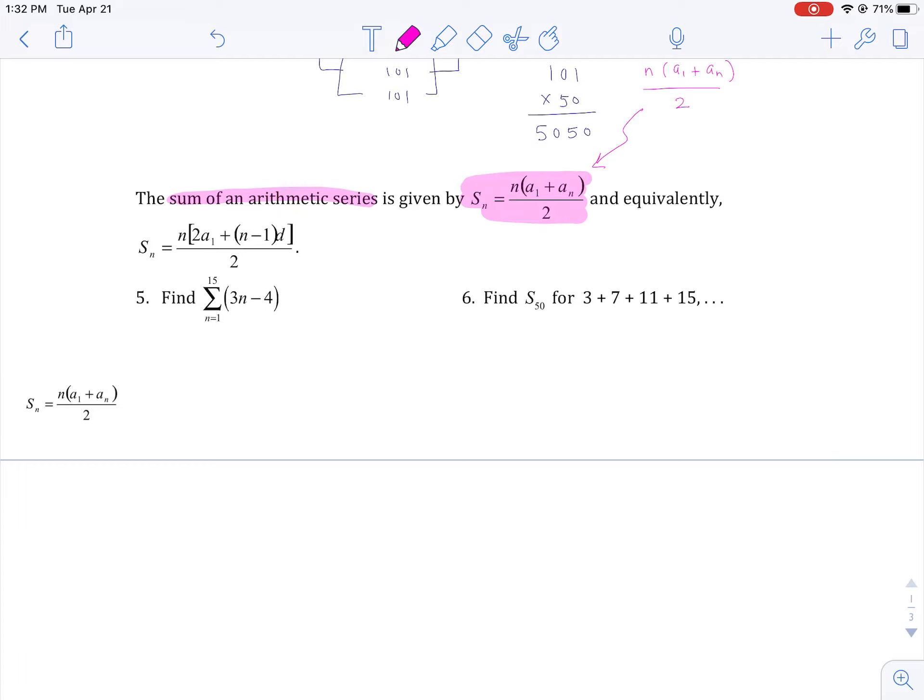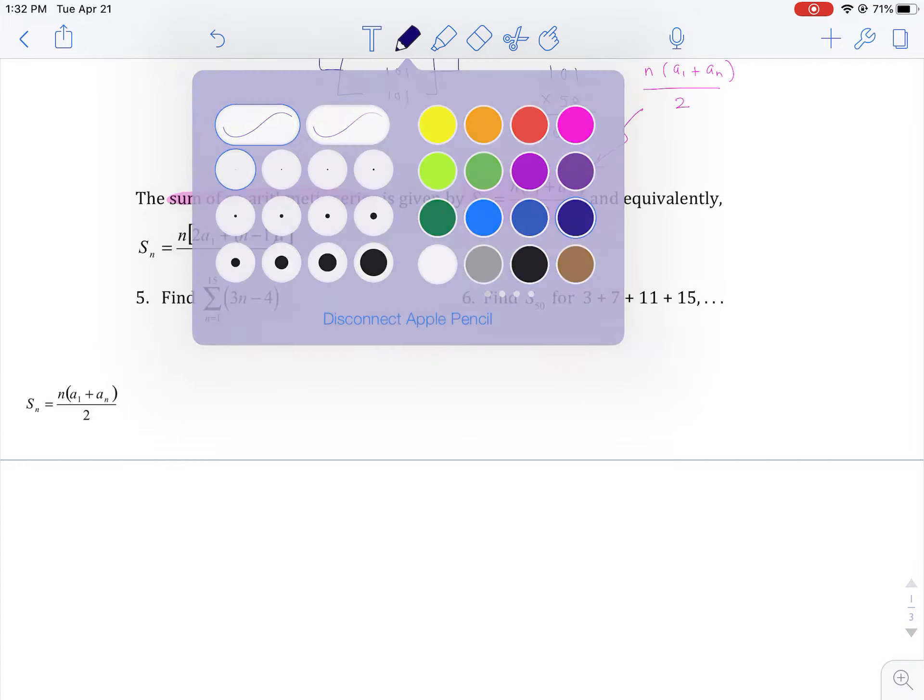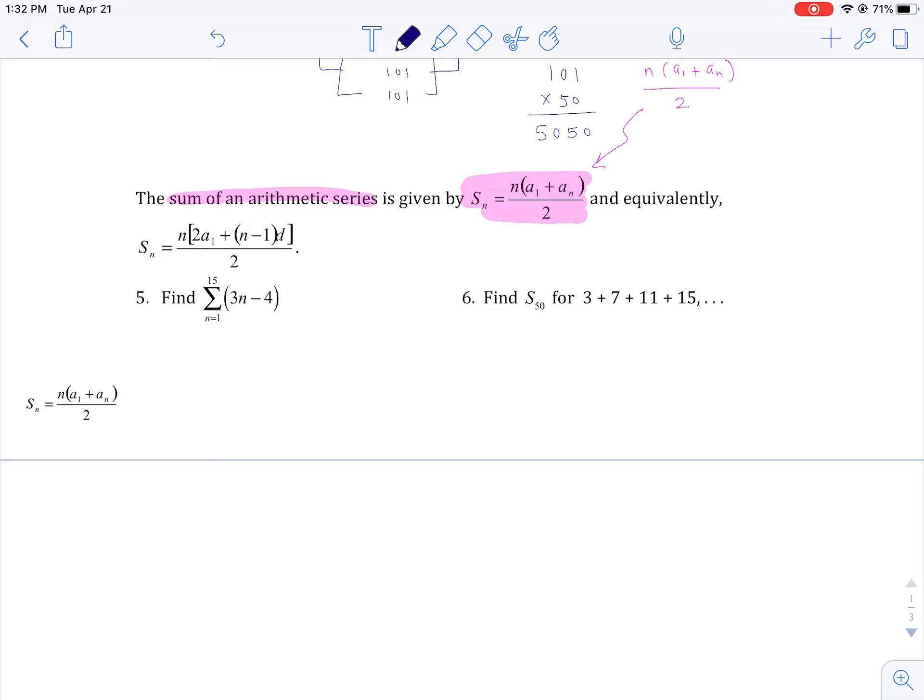Okay, so if we look at number 5, first of all, it's arithmetic because the argument there is linear, that 3n minus 4. In fact, my suggestion sometimes is go ahead and write out the first couple terms. So if you plug in 1, you'll get negative 1, plug in 2, you'll get 2. And then if you add 3 more, you get 5. And this keeps going.